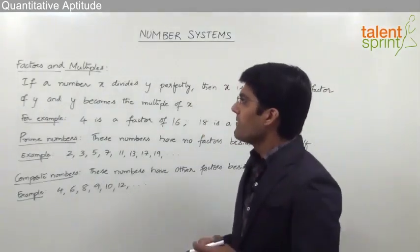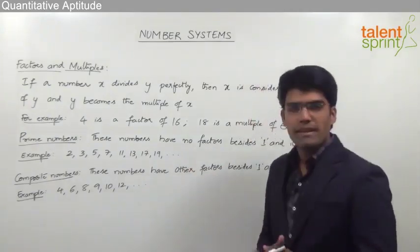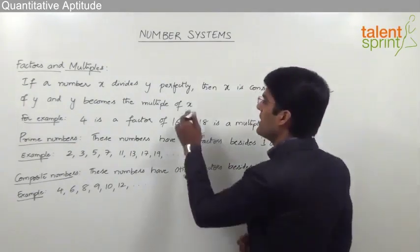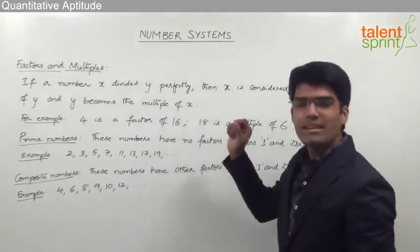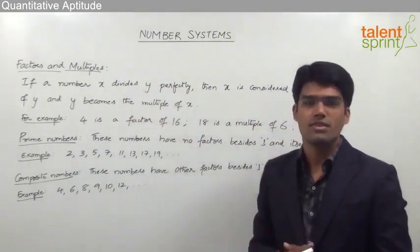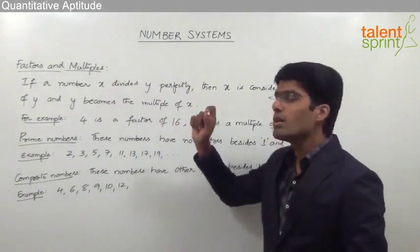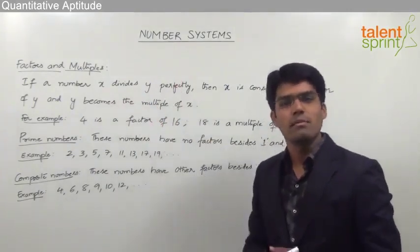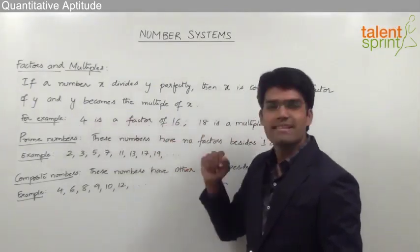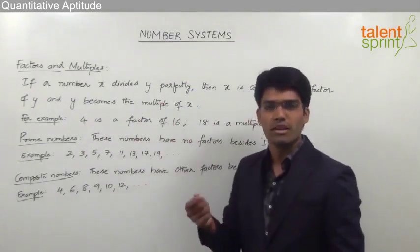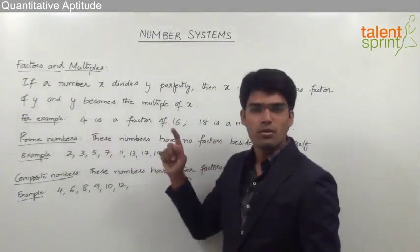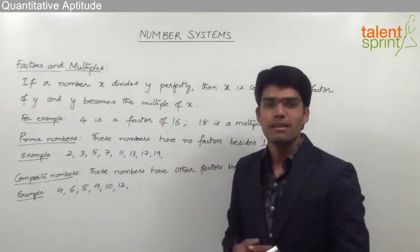Let us now understand what is meant by factors and multiples. If a number x divides y perfectly, then x is considered a factor of y and y becomes the multiple of x. A perfect division is one where the remainder is 0. For example, 4 is a factor of 16 because 4 can divide 16 exactly — 16 divided by 4 equals 4 with remainder 0. So 4 is a factor of 16 and hence 16 is a multiple of 4.